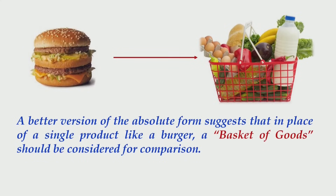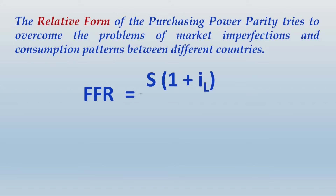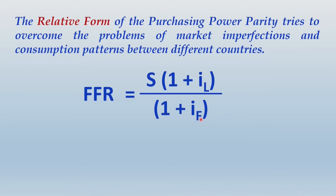A better version of absolute PPP suggests that in place of a single product like a burger, a basket of goods should be considered for comparison. The relative form of purchasing power parity tries to overcome the problems of market imperfections and consumption patterns between different countries. The fair forward rate (FFR) is computed by taking the spot rate multiplied by (1 + IL) divided by (1 + IF), where S is the spot rate, IL is the inflation rate prevailing locally, and IF is the inflation rate prevailing in the foreign country.